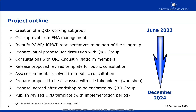Once the group is complete, we will prepare an initial proposal to be discussed with the entire QRD group. We will keep industry informed and have discussions with them via our platform. When we have a mature draft, we will release it for public consultation, assess the comments received, prepare a proposal, and then hold a workshop with all stakeholders. We will then present it to the QRD group for endorsement and publish it for implementation, hopefully by the end of next year.